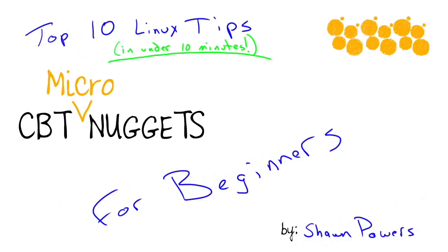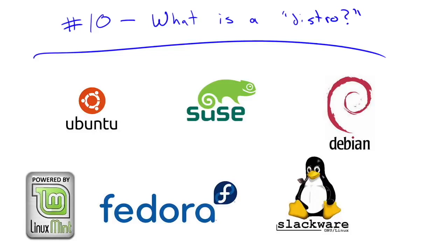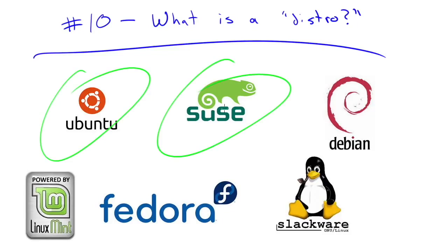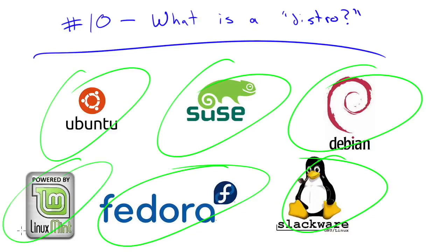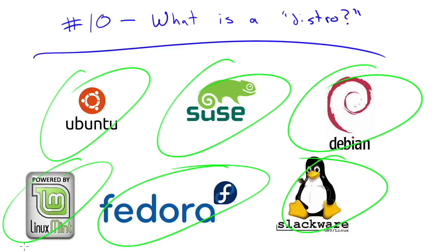Number 10: what is a distro or a distribution? You've probably heard of Linux, and you've also probably heard of all these other names — Debian, Slackware, Fedora, Linux Mint. What do those mean? Basically, it's like having a car — an automobile — but then having a Chevy, a Ford, a Toyota. That's kind of what these different distros are. They're not really brands; some of them are companies, but they're just different ways of approaching Linux.